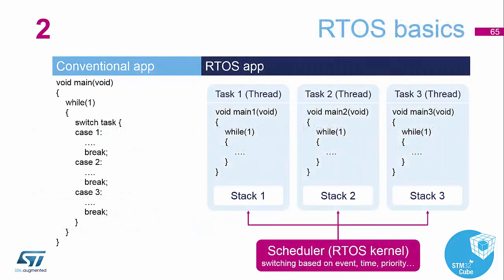Some basics of an RTOS: conventional code would be a linear bank of code with a switch statement doing all the various functions. Each of those tasks in the switch statement are now classed as an individual thread or task within the RTOS. Each of these threads will have their own small amounts of stack available to them, and their own routines and while-one loops inside.